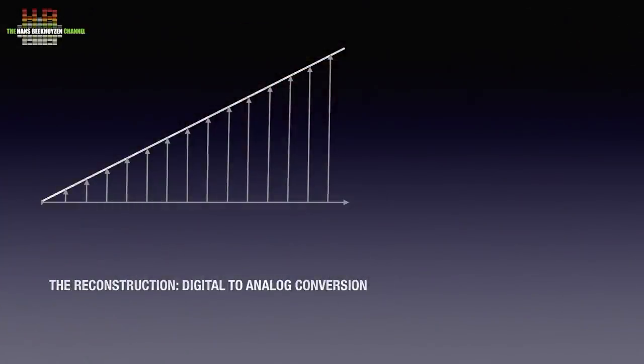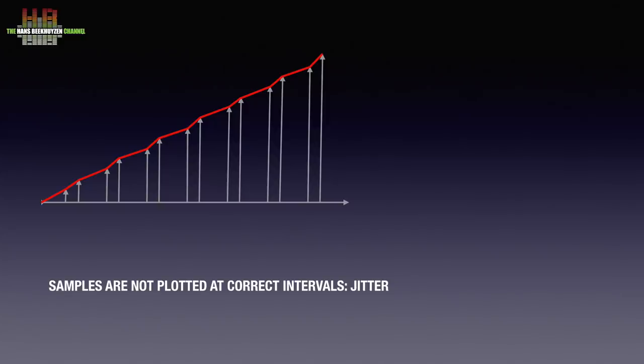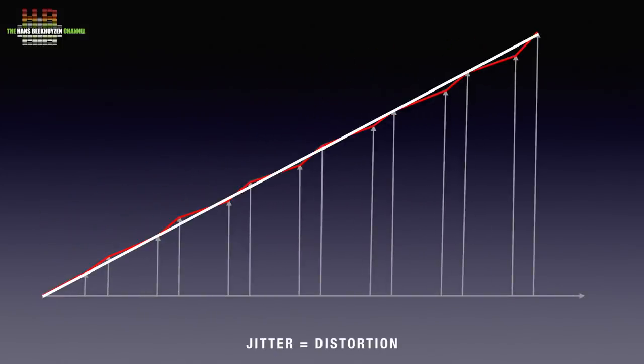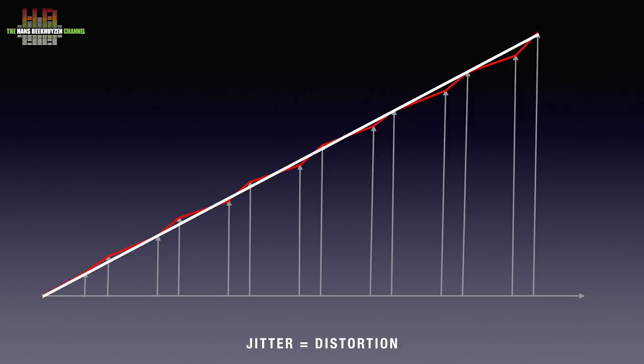So let's look at jitter during the digital to analog conversion. If for some reason every second sample is plotted too early due to a structural disturbance of the clock signal, you see that no longer a straight line is reconstructed. If we zoom in and plot the original line along the reconstructed line, you see the distortion as red parts of the reconstruction line appearing from behind the white original line. The form of jitter I showed here is just one of the kinds of jitter that can occur. It can also be random or correlated to the audio.